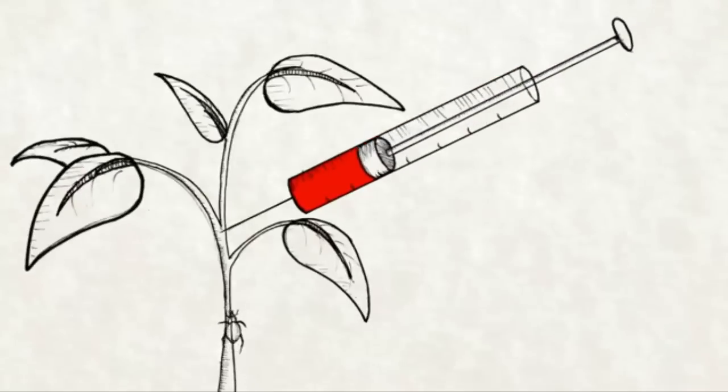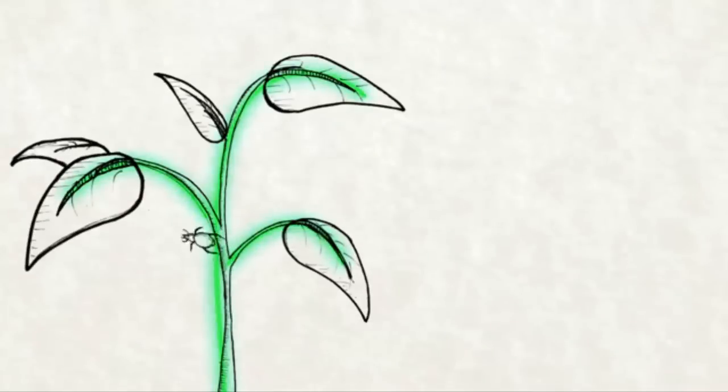Usually this entails engineering plants with toxic bacteria that kill bugs that try to eat the genetically modified plant.